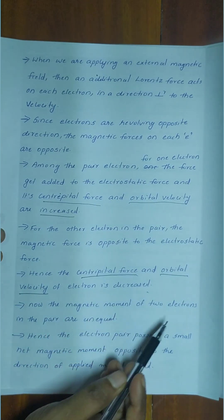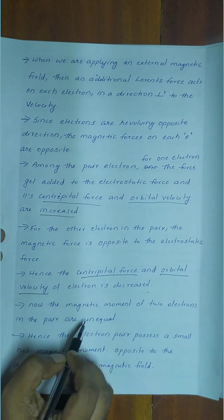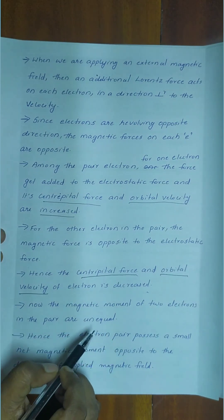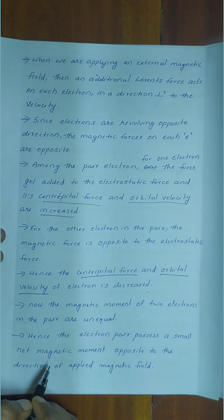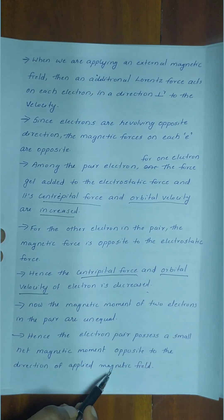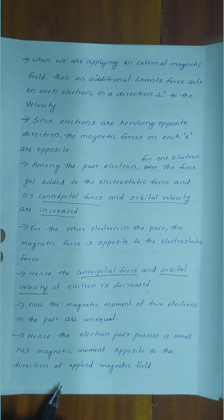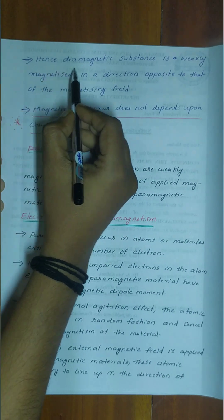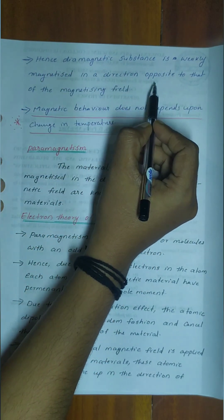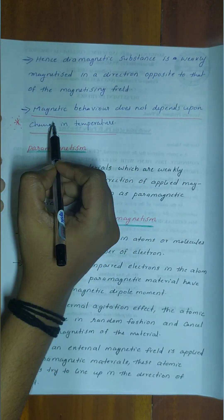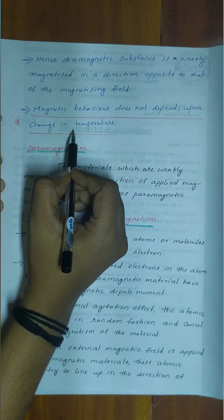Now, the magnetic moments of the two electrons in the pair are unequal. Hence, the electron pair possesses a small net magnetic moment opposite to the direction of the applied magnetic field. Hence, the material is weakly magnetized in a direction opposite to that of the magnetizing field.